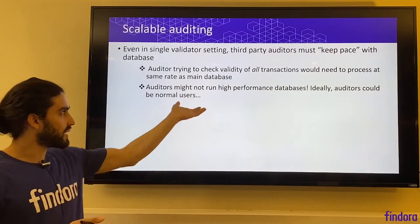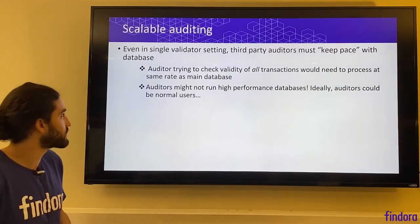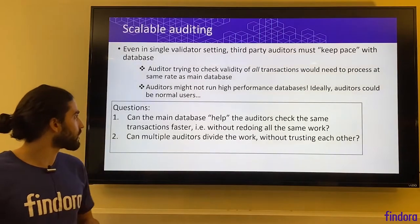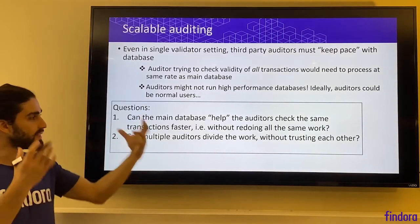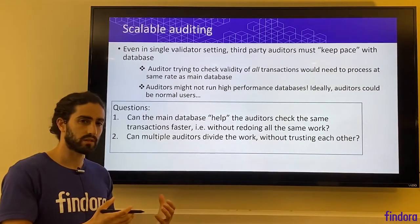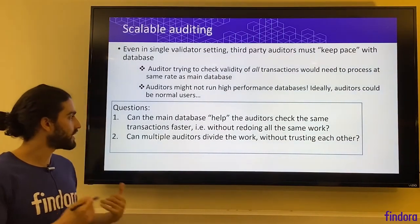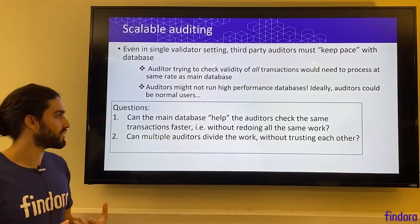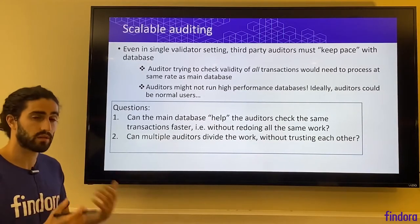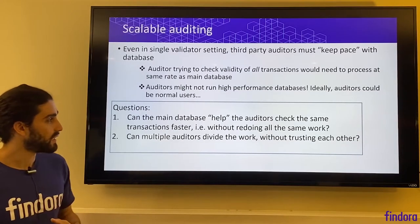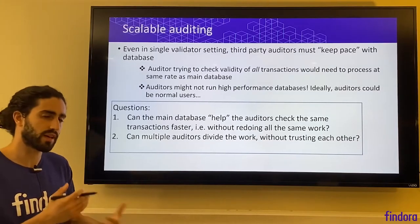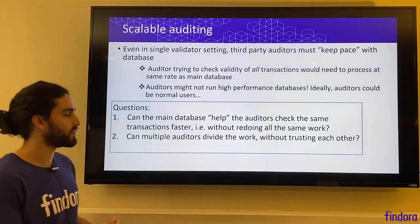Auditors may not be running a high performance database — ideally, auditors could be just like normal users. This introduces a question: can the main database, which is a high performance database, help these weaker auditors — say normal users — check the same transactions faster without redoing all the same work? We don't want to require auditors to be as high performance as the main database. So can the main database help them verify that the transactions were correct without having them redo all the same work?